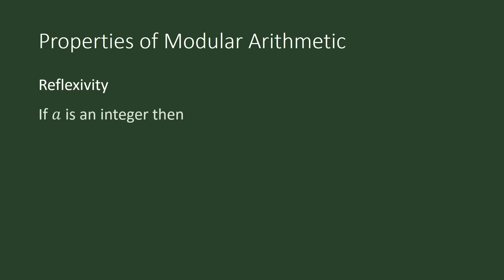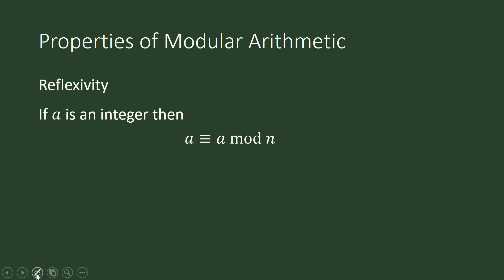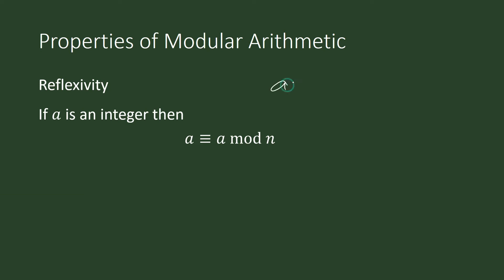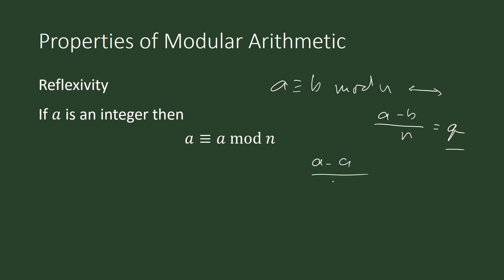Reflexivity: for any integer a, a is congruent to a mod n. Why is this so? Using our definition of congruence, a is congruent to b mod n if and only if a minus b divided by n is an integer. With a equals b, a minus a divided by n equals zero, and zero is an integer.